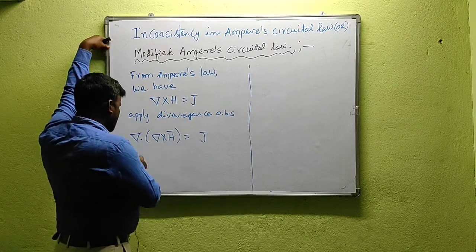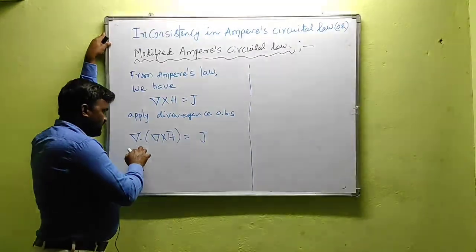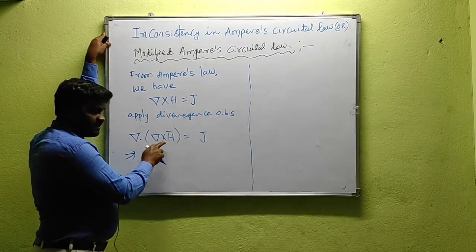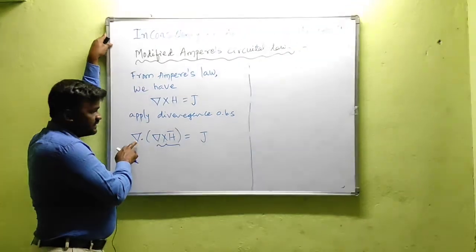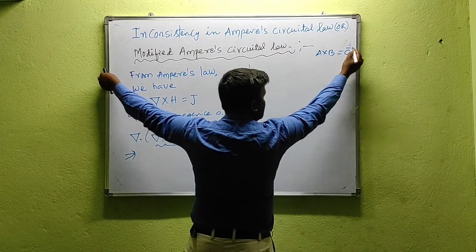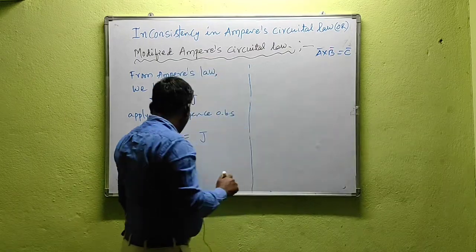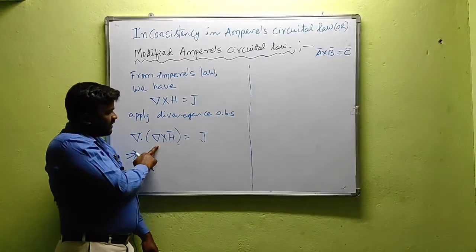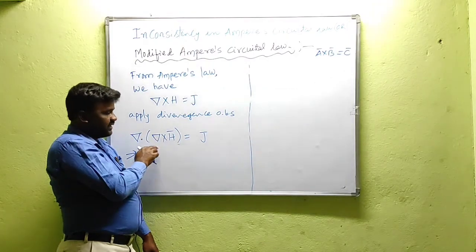Now, del dot (del cross H) — what does this mean? Del cross H gives a vector. That vector is perpendicular to both del and H. Just as A cross B equals C, where C is perpendicular to both A and B — here also, del cross H gives a vector perpendicular to both del and H, perpendicular to the del-H plane.